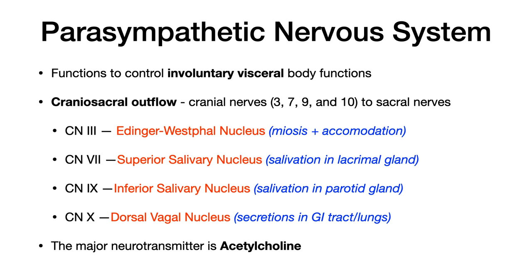To summarize: you need to know the cranial nerve, the nucleus it's paired with, and the function of that nucleus and cranial nerve tract. The major neurotransmitter of the parasympathetic nervous system is acetylcholine, and that's really important to understand if you're going to keep all of the pharmacology straight.